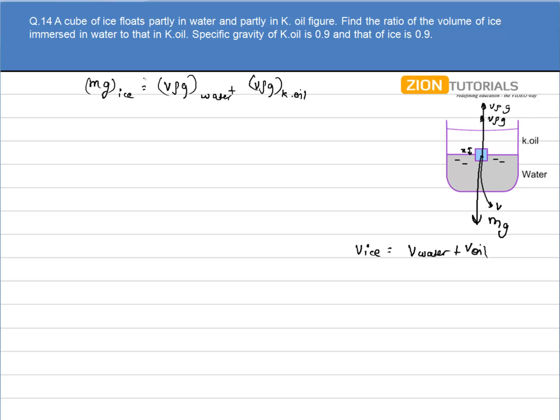I can write the mass of ice, the total mass of ice, can be written as volume times density of ice times g. For this, the volume is the volume that is dipped in water times ρ of water times g, and this is volume that is dipped in oil times ρ of oil times g. So g cancels from all sides. V_ice times ρ_ice is given as 0.9.